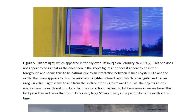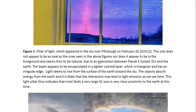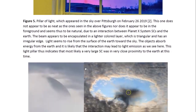This beam appears to be encapsulated in a lighter colored layer which is triangular towards the bottom, and light seems to rise from the surface of the Earth toward the sky — a pillar rising up from the Earth towards the sky. The objects, the stellar cores, absorb energy from the Earth. It is likely therefore that the interaction may lead to light emission as we see occurring here. This light pillar does indicate that most likely a very large stellar core was in very close proximity to the Earth at this time, creating this effect.